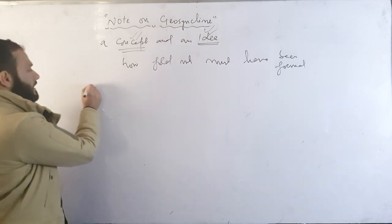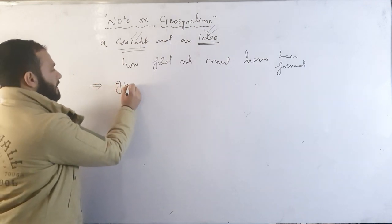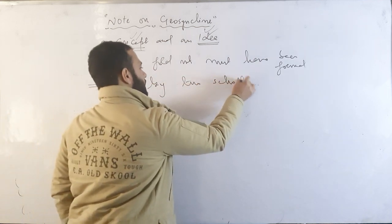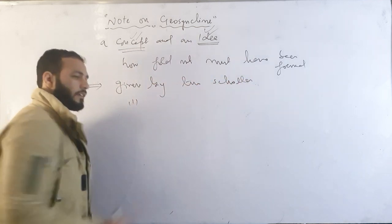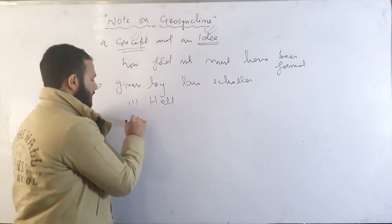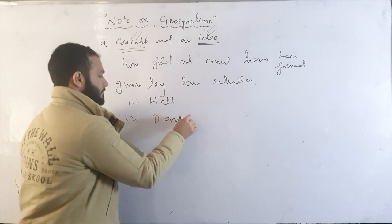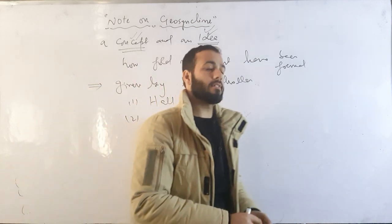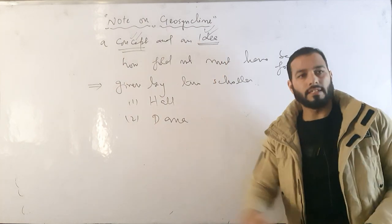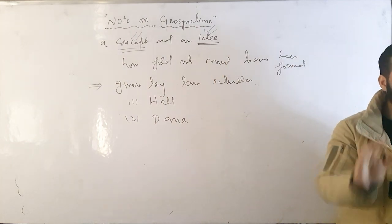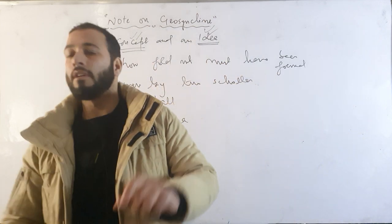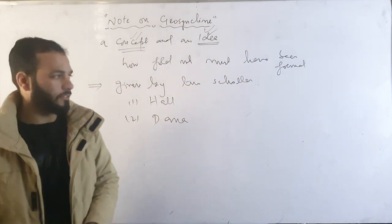This is a concept given by two scholars — number one is Hall and number two is Dana. Both these scholars have given a concept called geosyncline, which explains how fold mountains must have been formed.